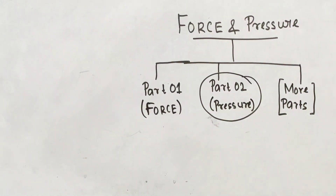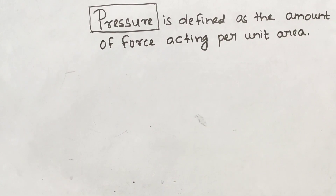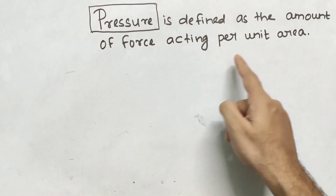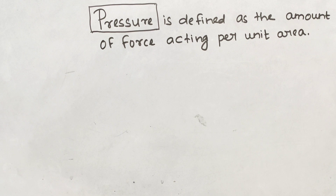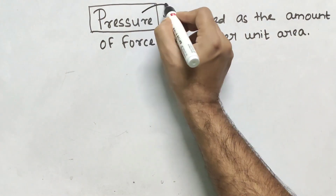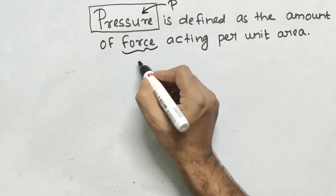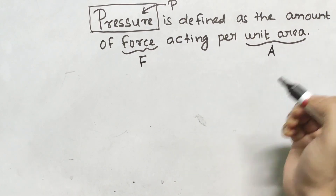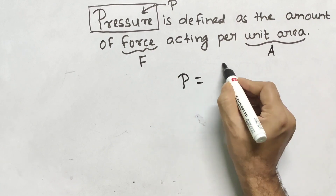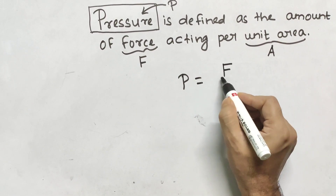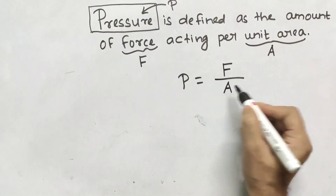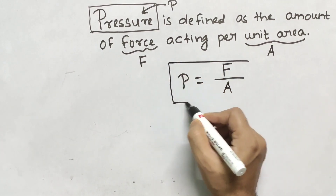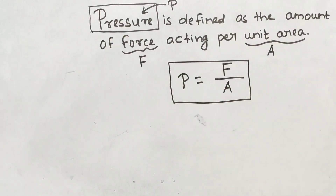So let's start with the definition first. Pressure is defined as the amount of force acting per unit area. The mathematical expression is: pressure is denoted by P, force is denoted by F, and unit area is denoted by A. So pressure equals force per unit area — that is the mathematical expression of pressure.